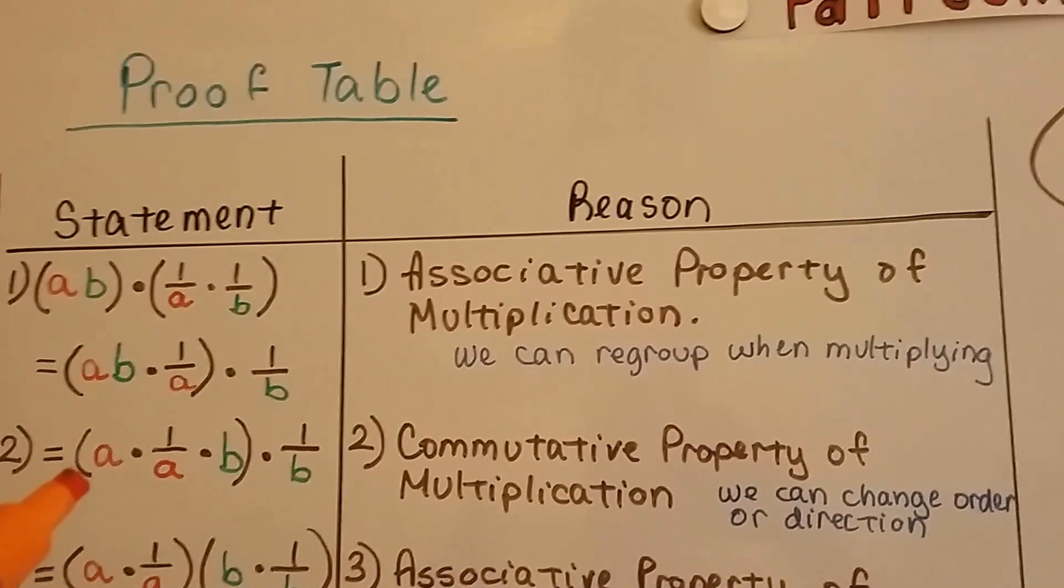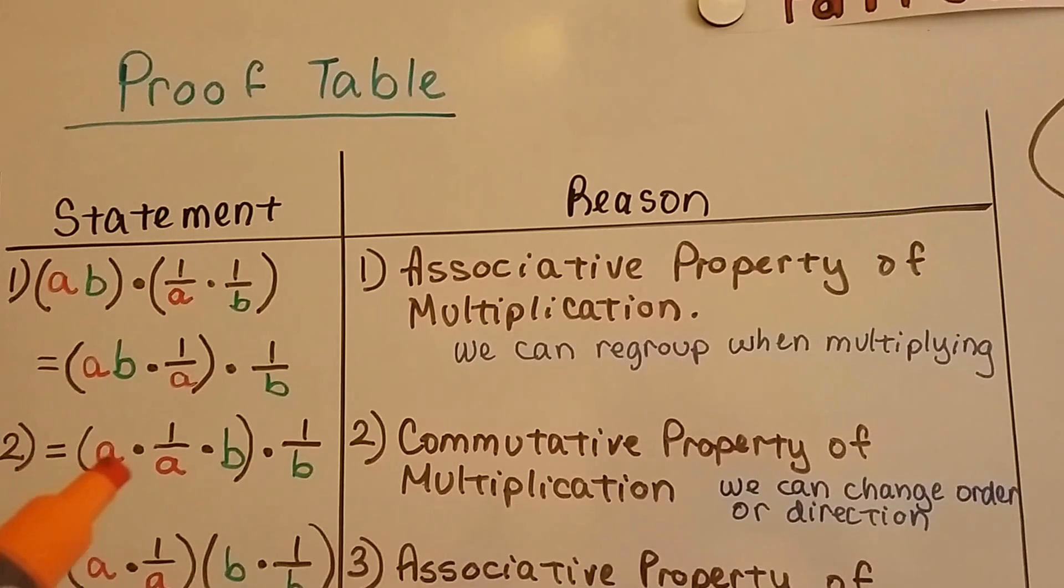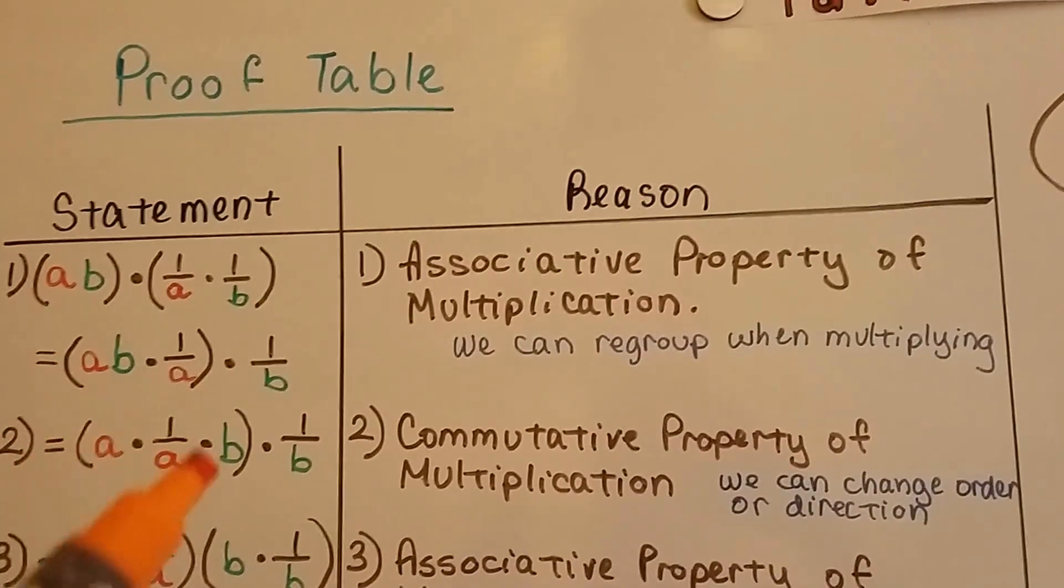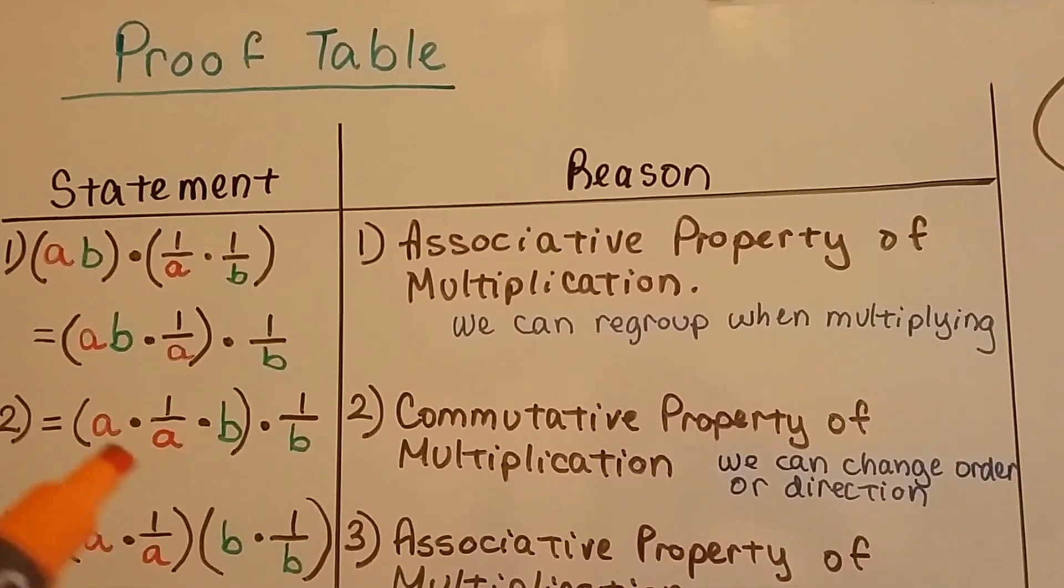This is going to equal the same thing as a times 1 over a times b. So we changed the direction and order of what was inside of this parentheses.